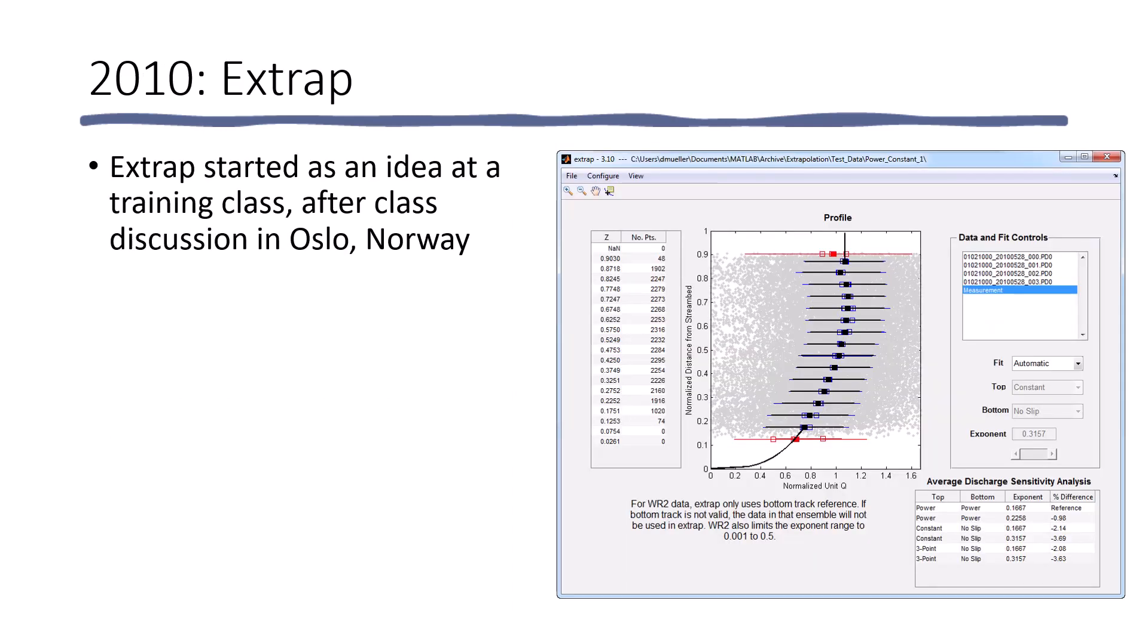In 2010, after some discussion and an after-class discussion in a training class in Oslo, Norway, it was determined that we could actually compress the entire cross-section velocity profile onto a single plot by using the normalized distance from the stream bed and the normalized unit Q for every cell and every ensemble in the measurement. This was further expanded, and eventually the extract program was created. And the extract program then also uses statistical parameters as well as some empirical logic to automatically select a preferred extrapolation fit for the data. In addition, at the bottom right of the screen that you see here, there is an average discharge sensitivity analysis, so you can see how important picking the extrapolation really is to your final discharge.